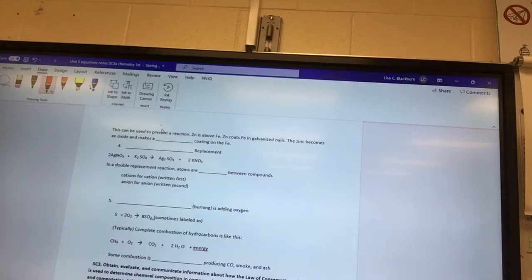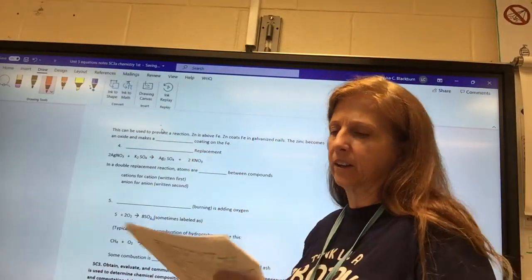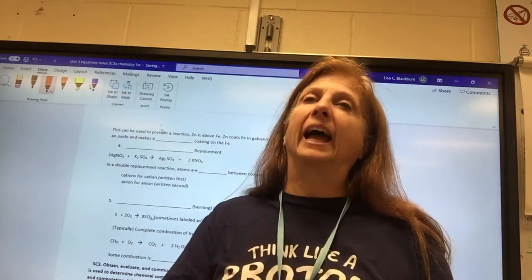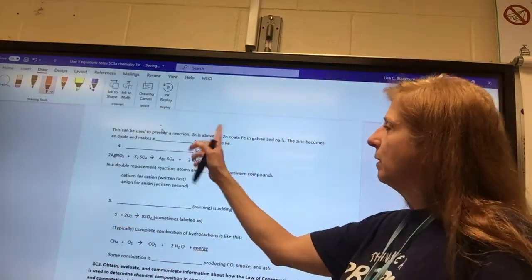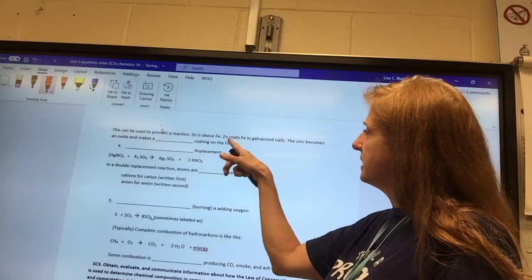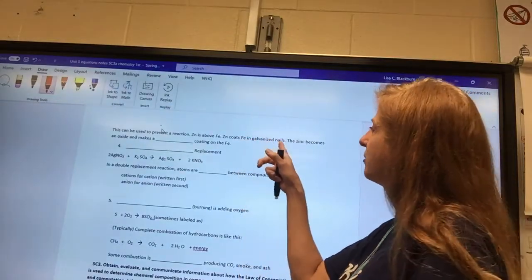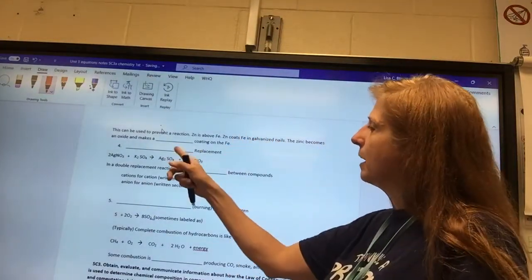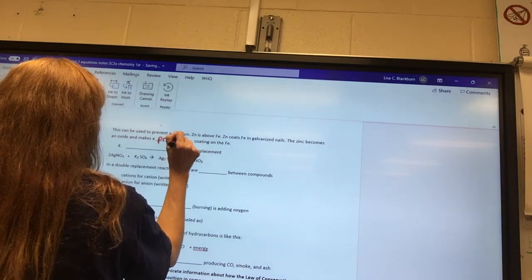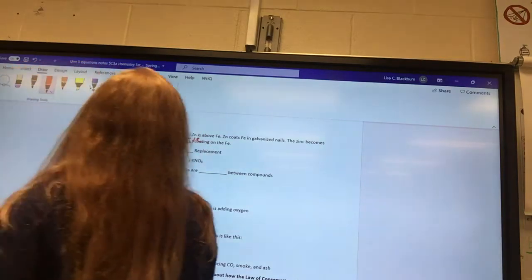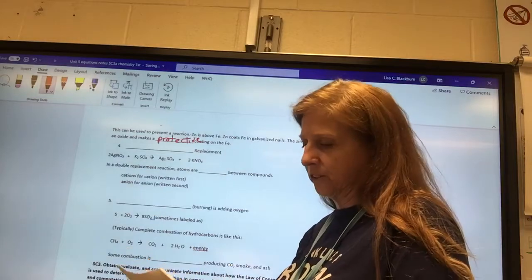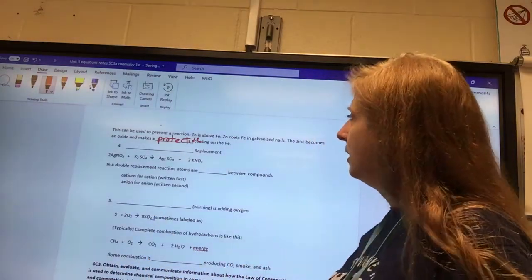Knowing whether or not a chemical can replace another one and single replacement can be used to prevent a reaction. Because remember, one of the reasons why we don't want a reaction is the products. They use this with zinc. It's stronger than iron. Zinc is above iron. So, they will use zinc to coat iron and galvanize things. If you ever had a galvanized bucket or galvanized nails, the zinc becomes an oxide, and it makes a protective coating on the iron. So, it won't rust. So, iron is great, but it rusts. But if you coat it with zinc first, it will protect it.